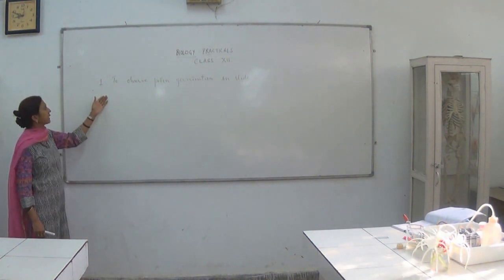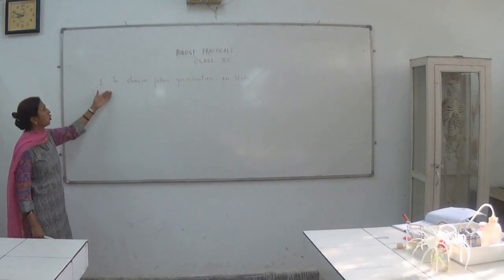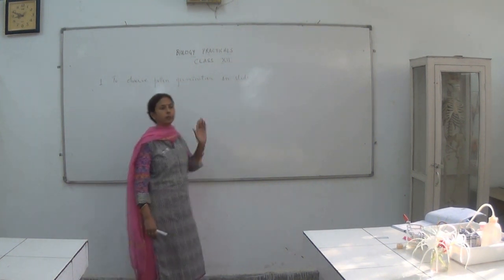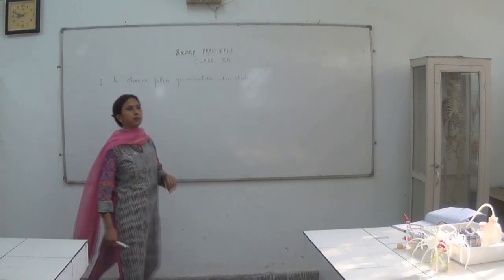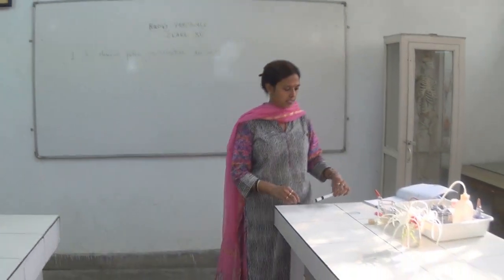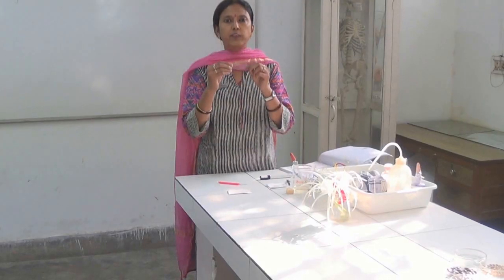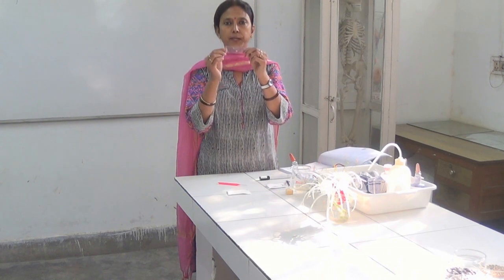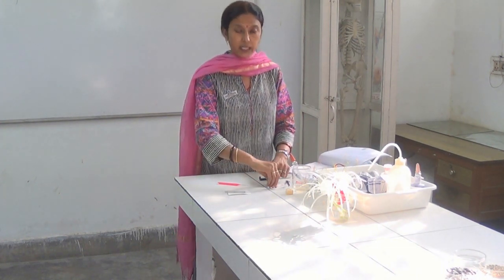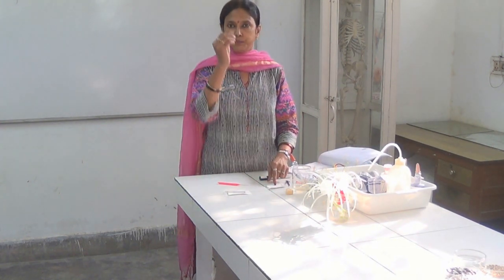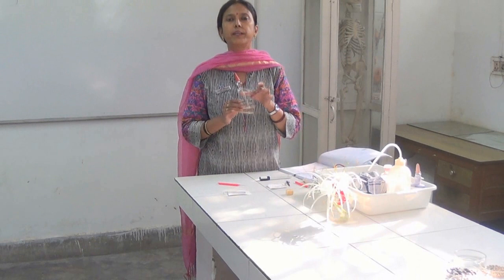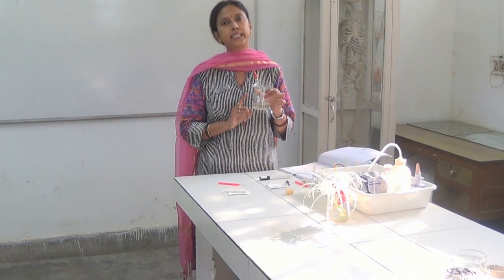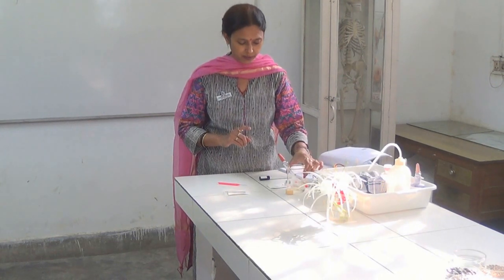We are going to start the first practical experiment to observe pollen germination on a slide in a nutrient medium. For this experiment, we will need a special slide called a cavity slide which has a small depression in it, a cover slip, and a special nutrient medium which contains water, sucrose, boric acid, and calcium nitrate in a proper proportion.